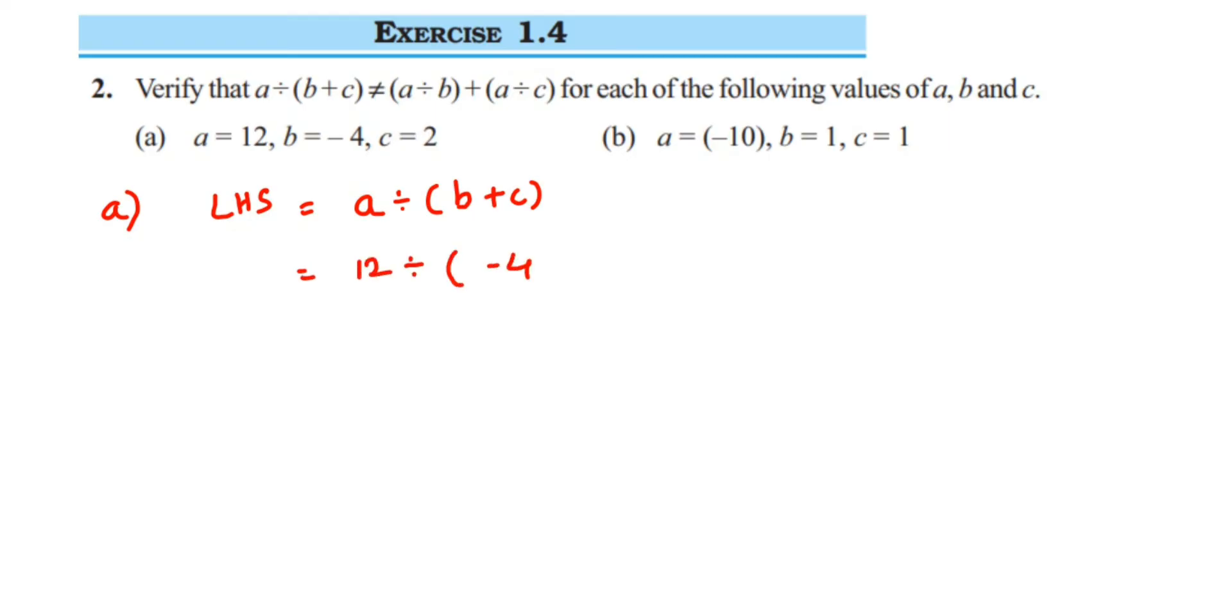First solve the bracket part. So 12 divided by (-4+2). You're adding integers with different signs which means we're going to subtract them. So 4-2 will be 2. Put the sign of the number which is greater. Its sign is negative, so minus. Now do division. So 12÷(-2). Cancel 2 and 12: 2 ones are 2, 6 are 12.